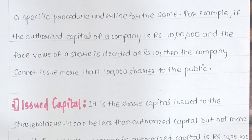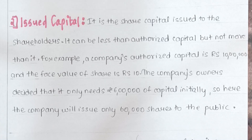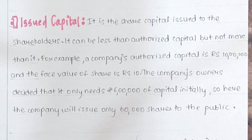Moving on to issued capital — it is that capital which is actually issued to the shareholders. This capital can be less than the authorized capital, but it cannot be more than the authorized capital. For example, if a company's authorized capital is rupees 10 lakhs and the face value is rupees 10, but the company only needs rupees 6 lakhs initially, it will issue only 60,000 shares to the public (60,000 × 10 = 6 lakhs).